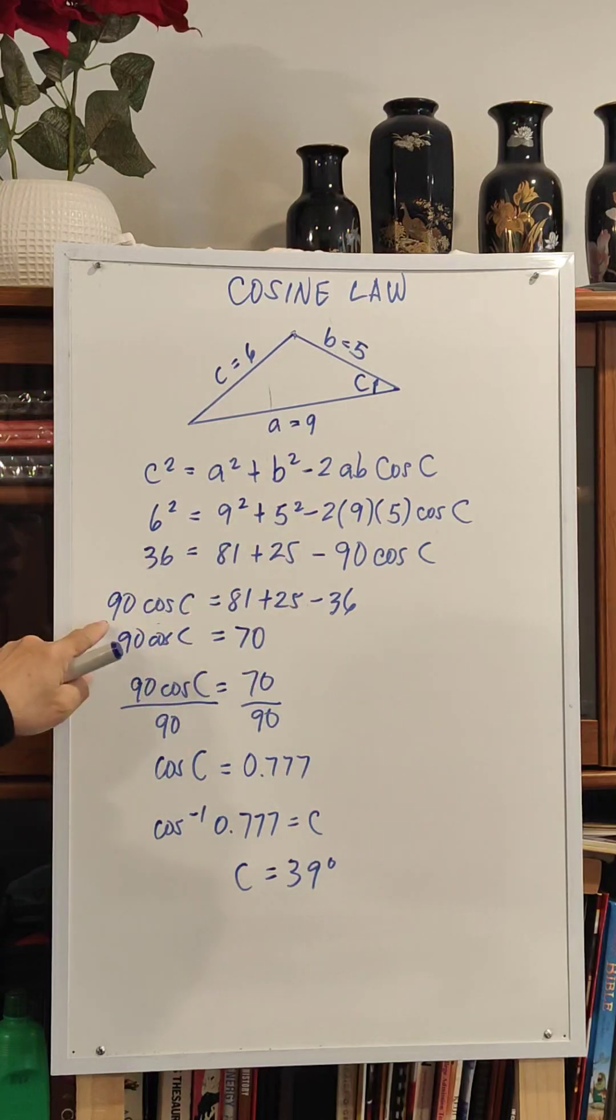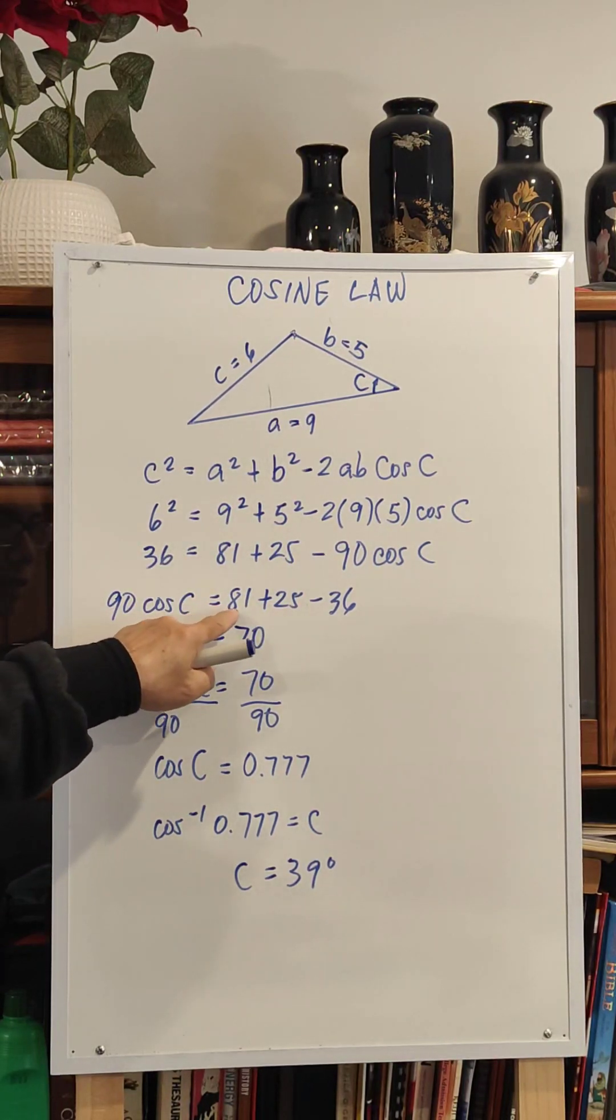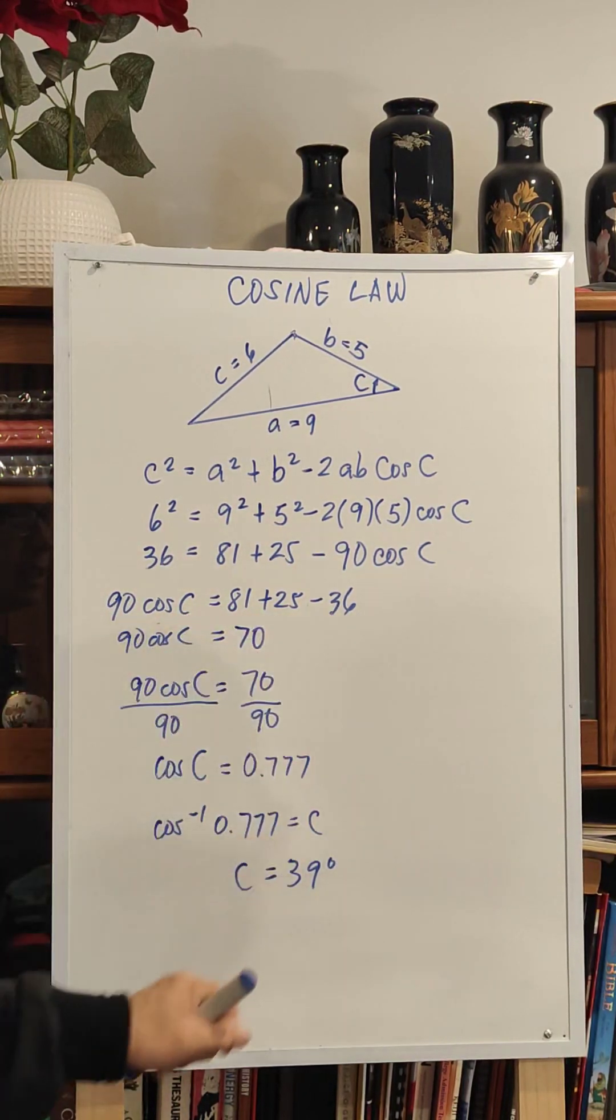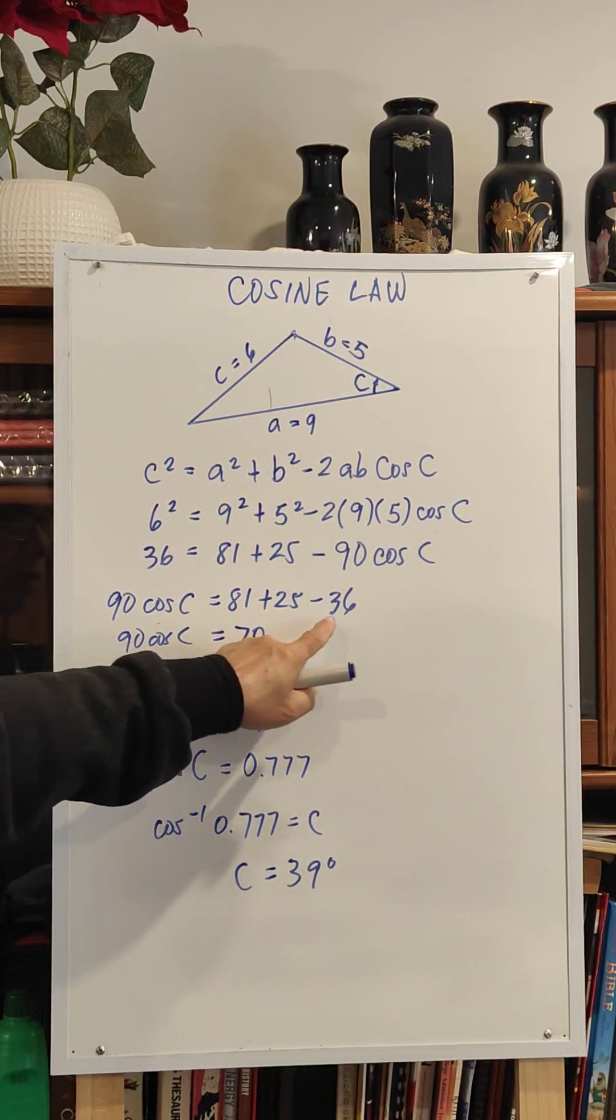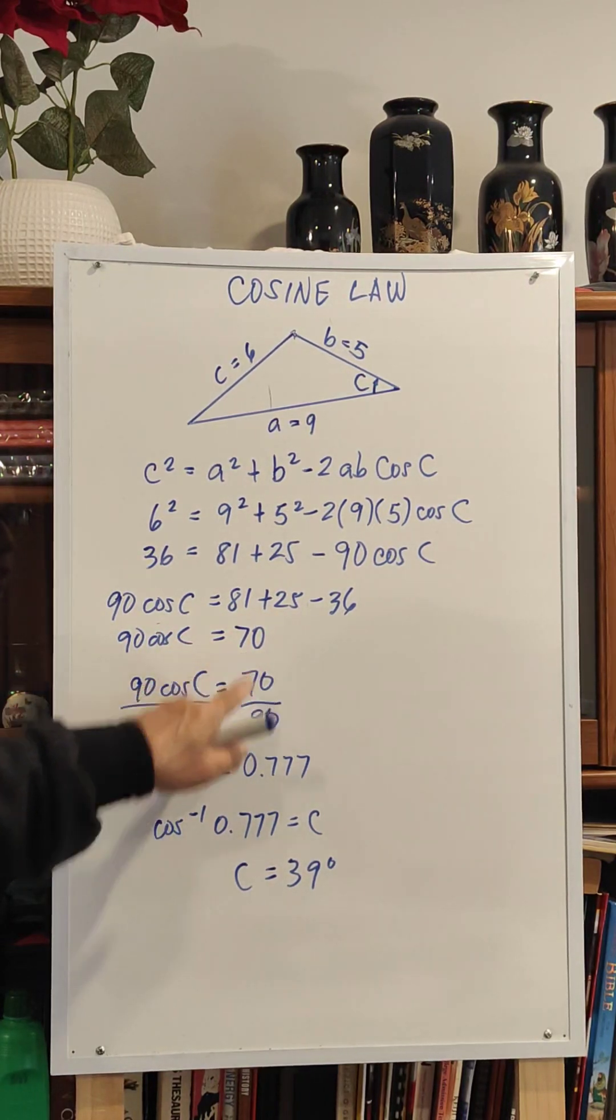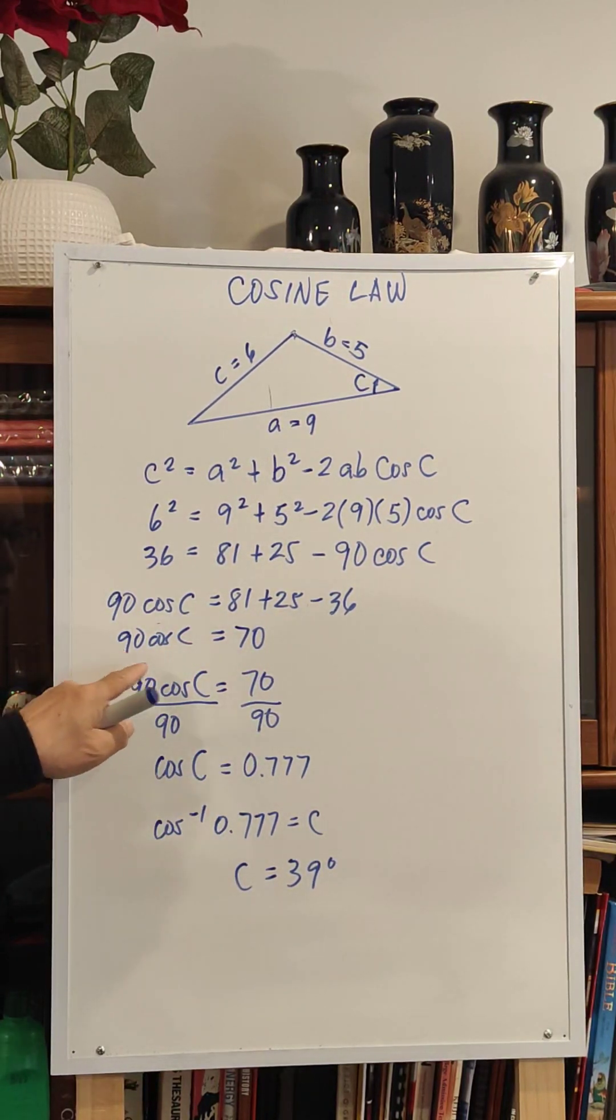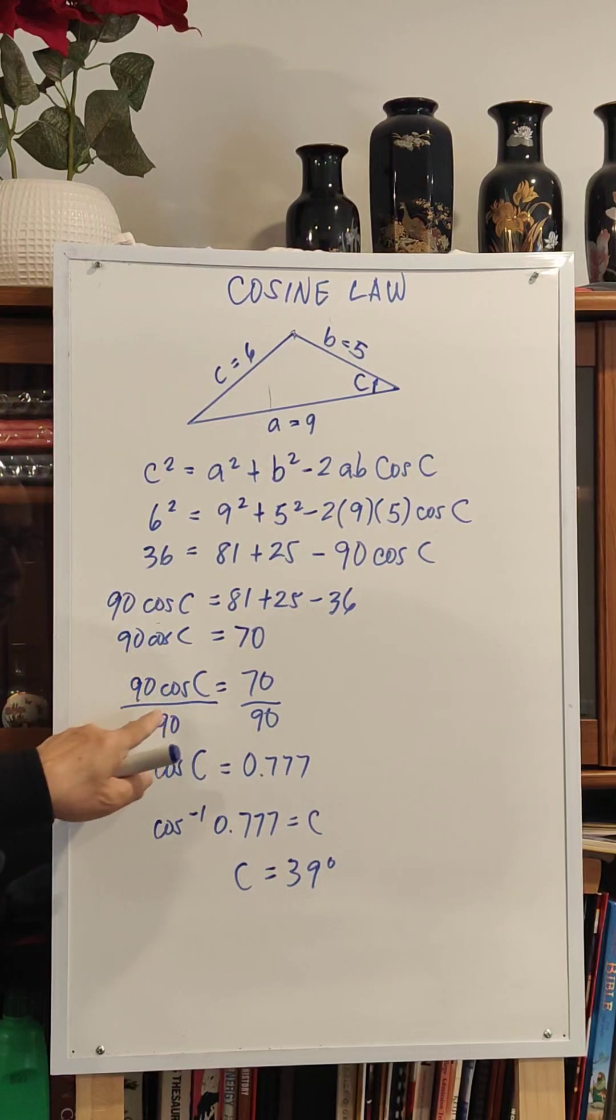We have 90 cosine C is equal to 81 plus 25 minus 36. 81 plus 25 minus 36 is 70. So we divide 90 on both sides to remove this 90.